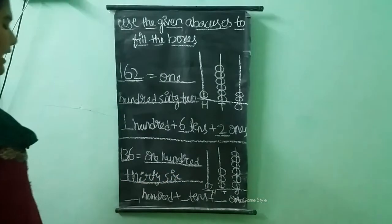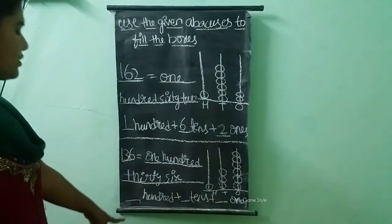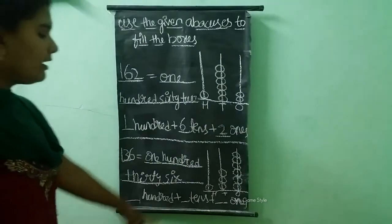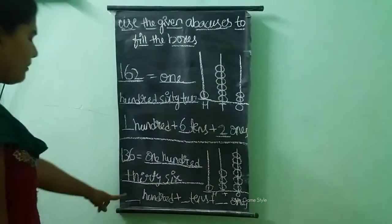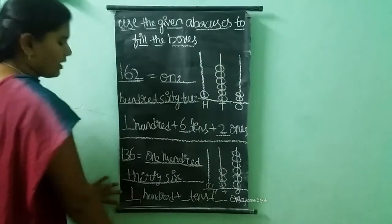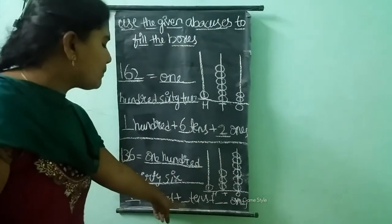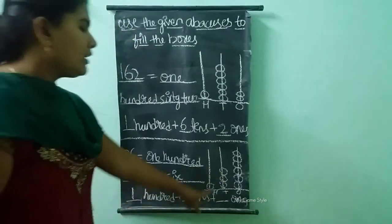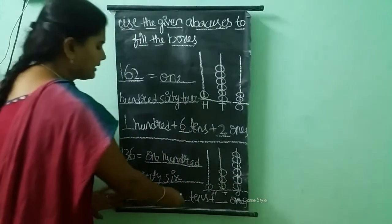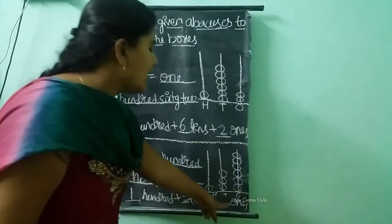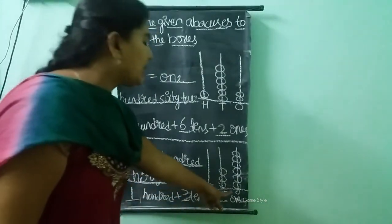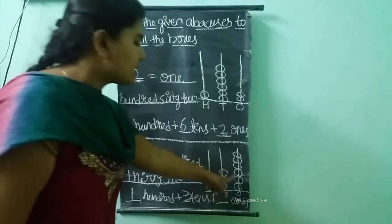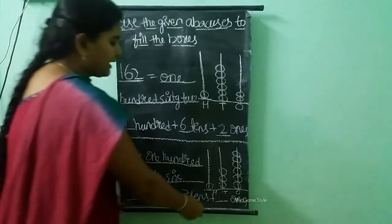And next we need to write the place values also. In hundreds place, how many beads are there? Only one bead is there, so I am writing one here. In tens place, how many beads are there? Three beads are there, so I am writing three here. And in ones place, how many beads are there? Six beads are there, so I am writing six here.